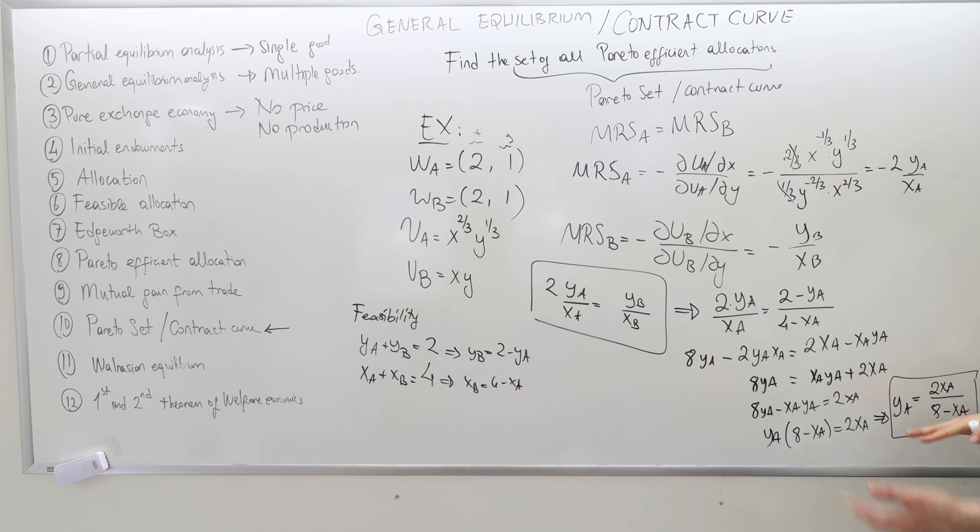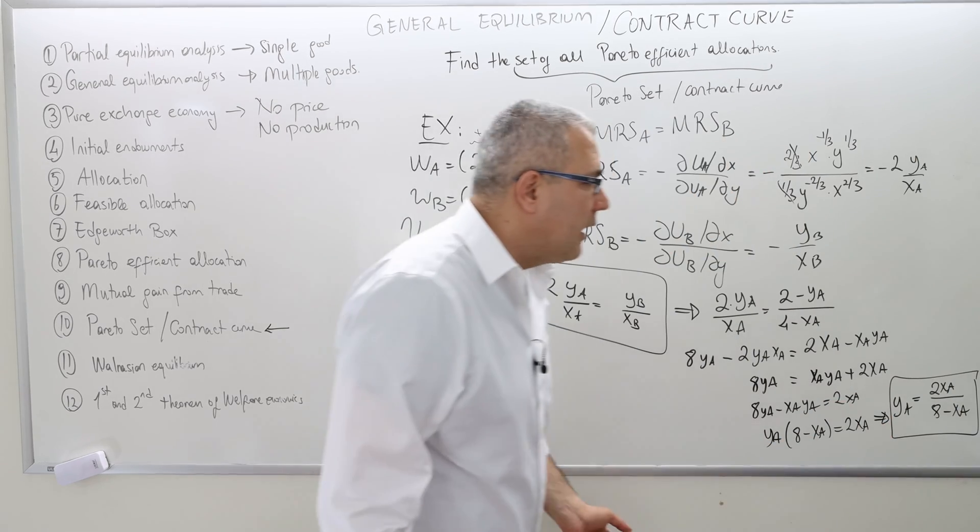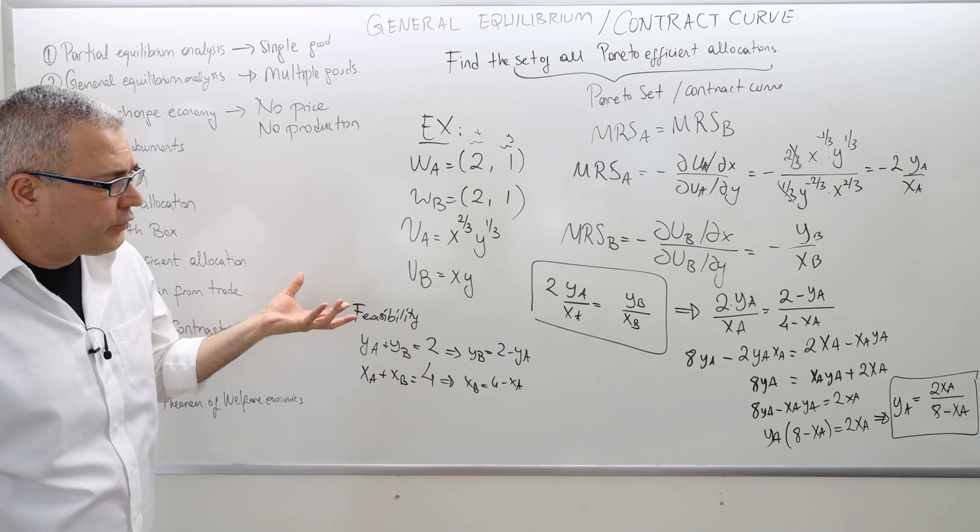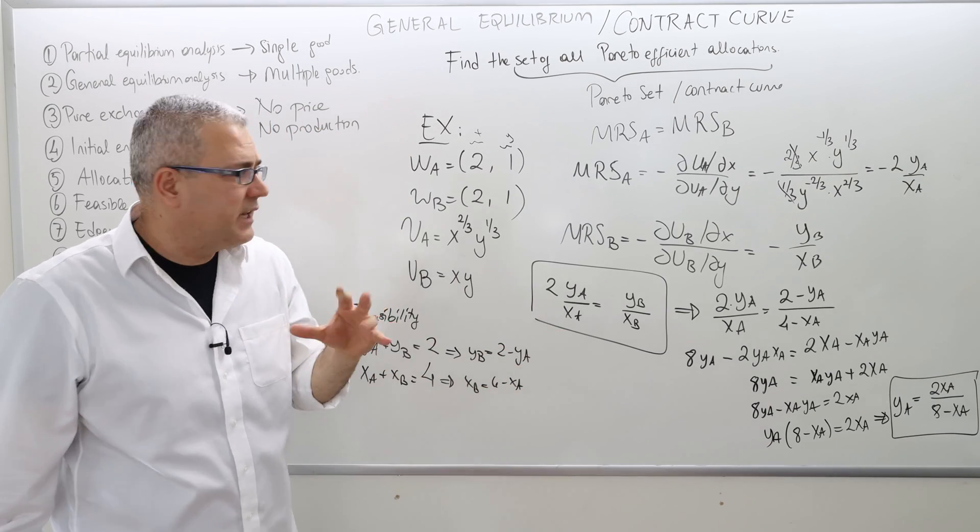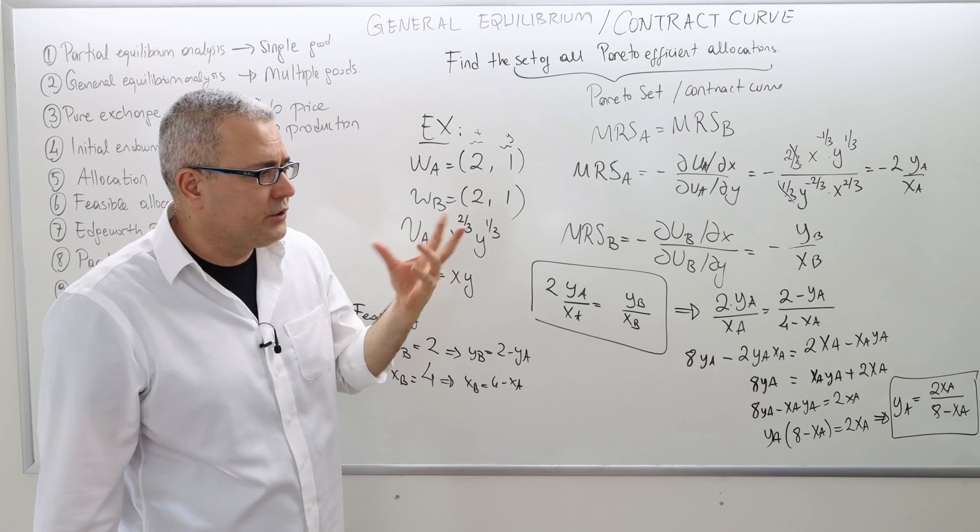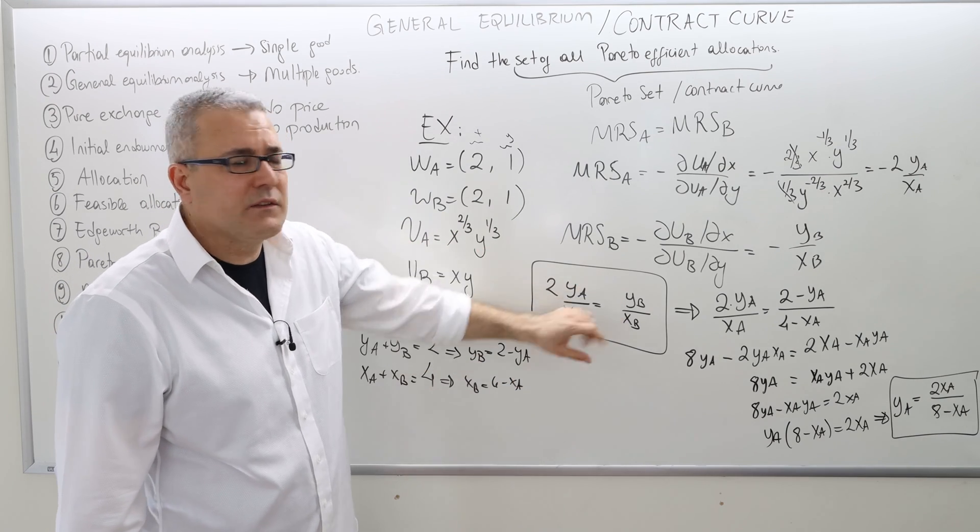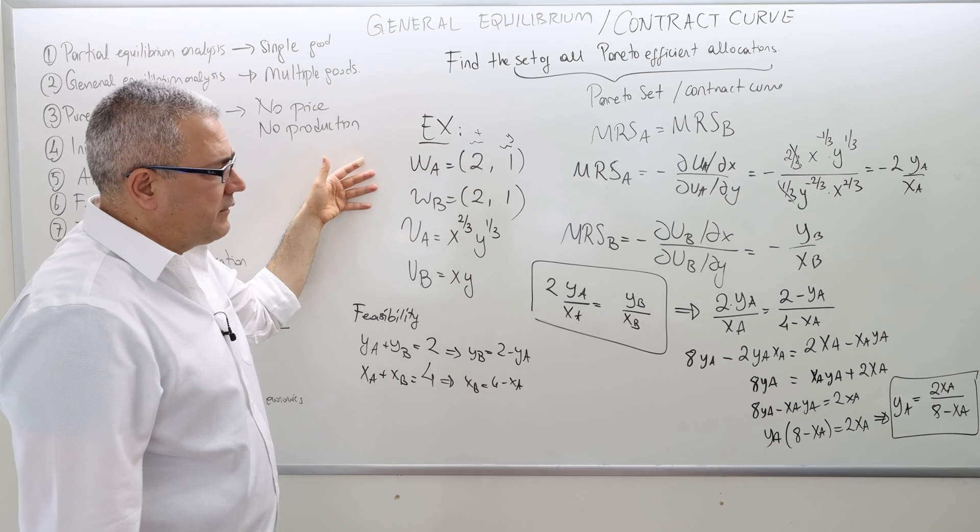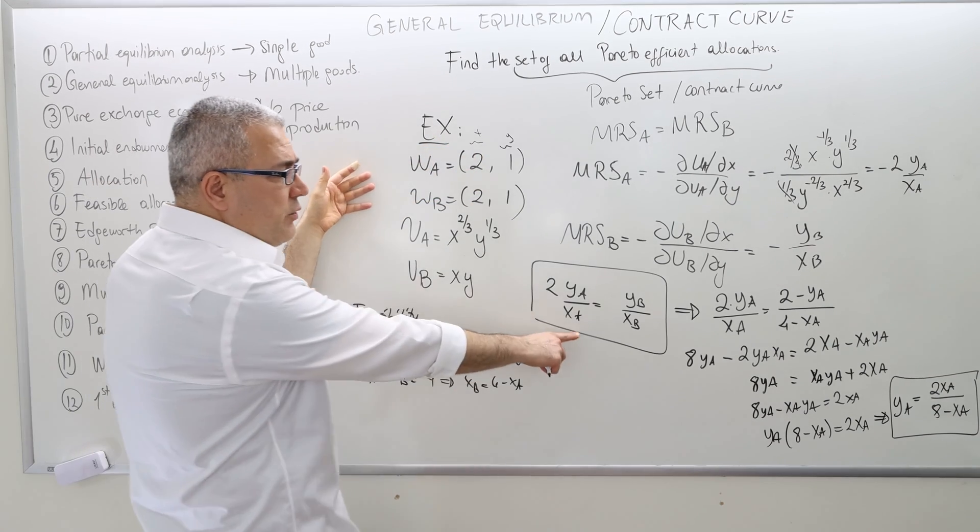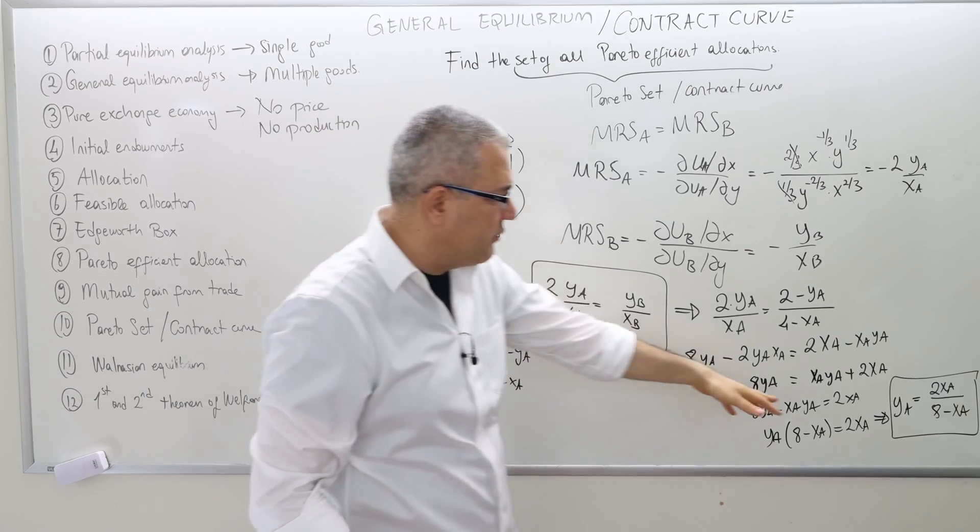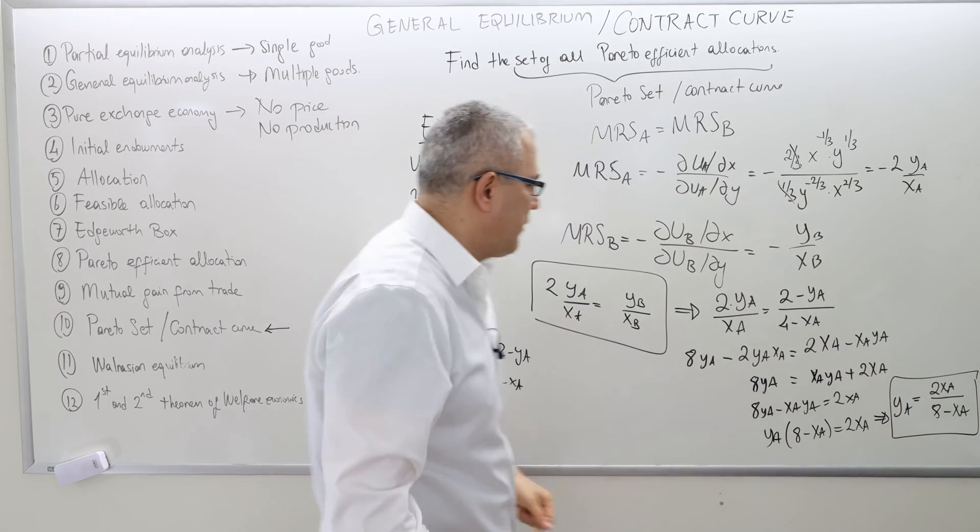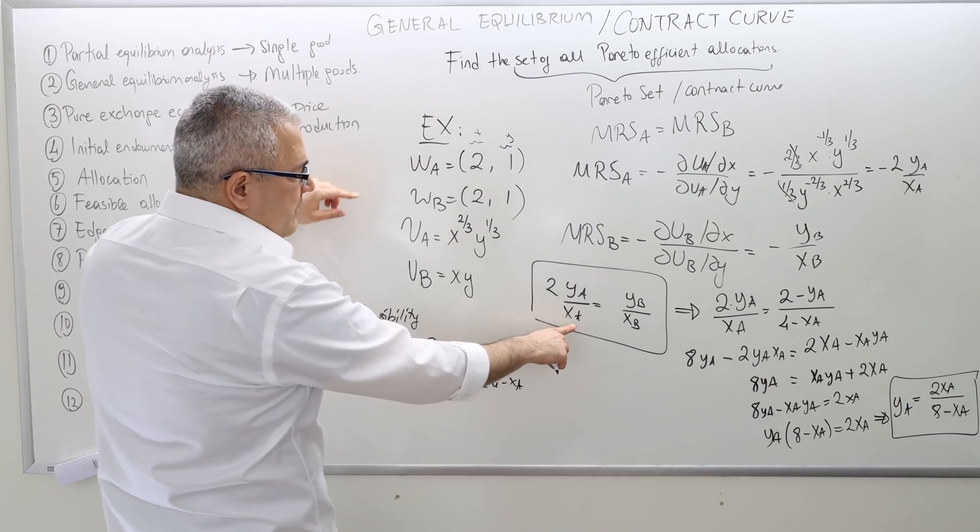Therefore, y_A equals to 2 x_A divided by 8 minus x_A is another way of writing the contract curve. This is best if you would like to draw the contract curve. But if you want to just check if an allocation is Pareto-efficient or not, just leave it as this. Finding this requires a lot of calculation. So use this.